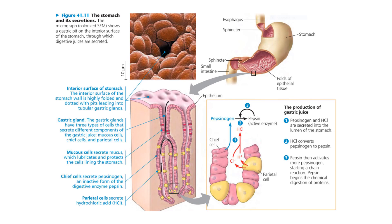One function of the acid is to break apart the cells in food and denature proteins. The acid also kills most bacteria and other microbes that are swallowed with food. The interior surface of the stomach wall is highly folded and dotted with pits leading into the tubular gastric glands.